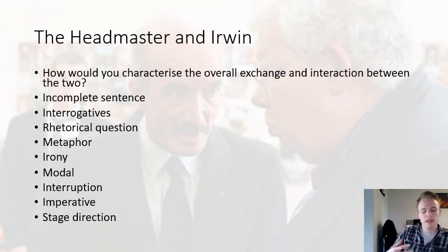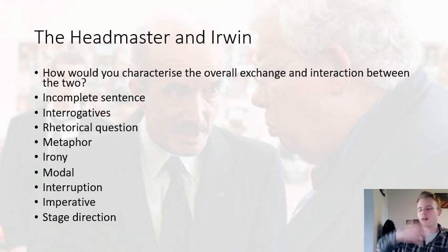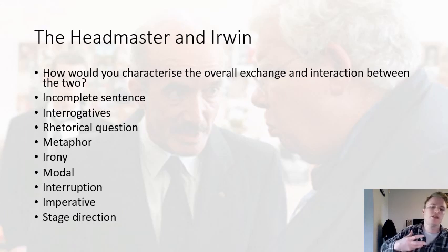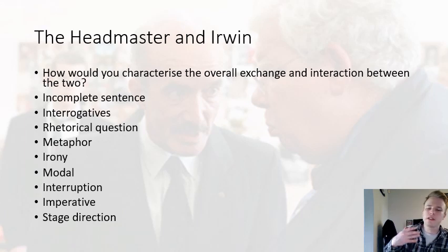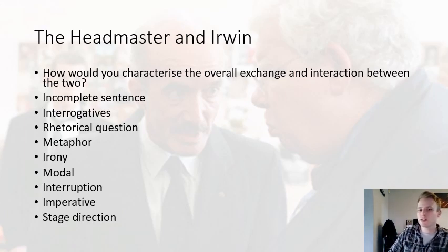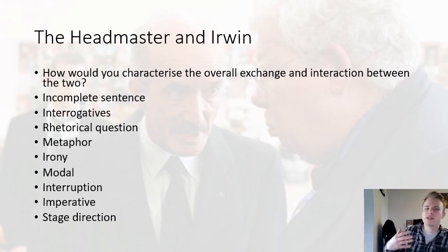Outer appearance is what's important to the headmaster, again: Irwin is a young man and the headmaster tells him to 'grow a moustache — I'm thinking classroom control.' He's assuming all classroom control comes down to outward appearance. This imperative at the end of this section shows that everything with the headmaster comes down to outer appearances over realities — he doesn't care to scratch the surface.